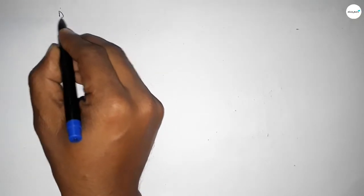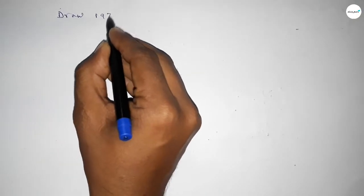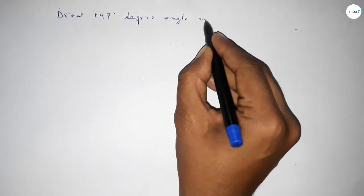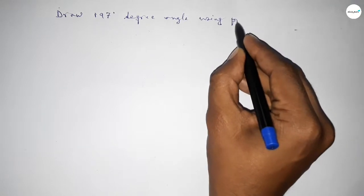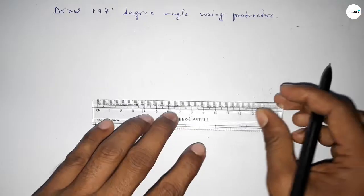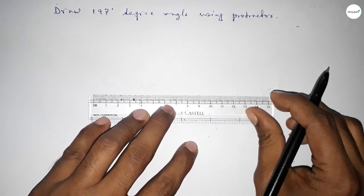Hi everyone, welcome to SI Share Classes. Today in this video we have to draw 197 degree angle by using protractor. So let's start the video. First of all, we have to draw here a straight line of any length. First drawing here a line, next taking here B point and here C point.